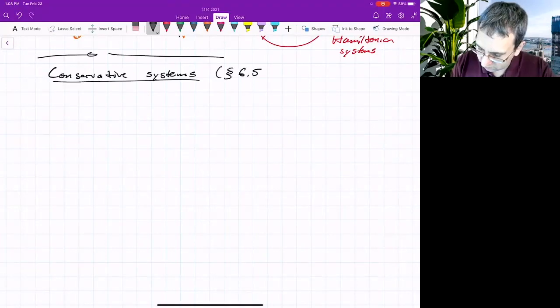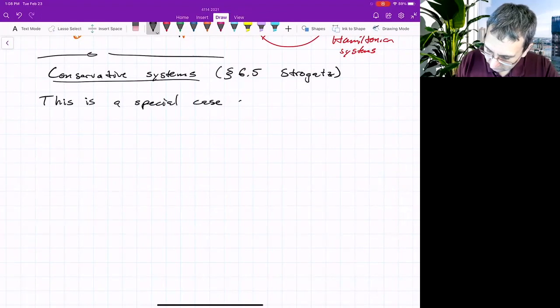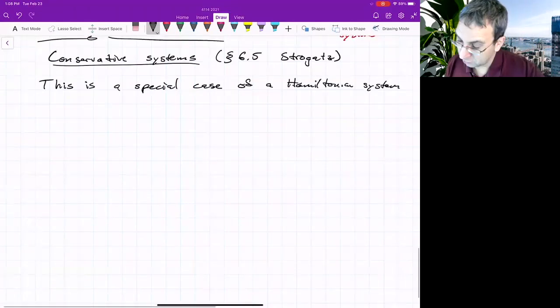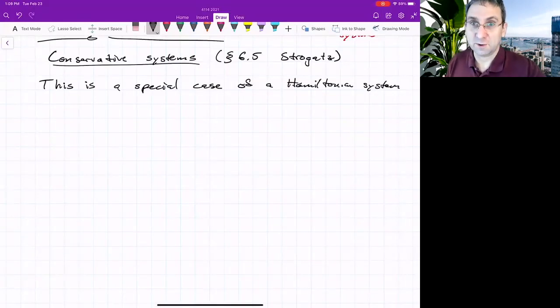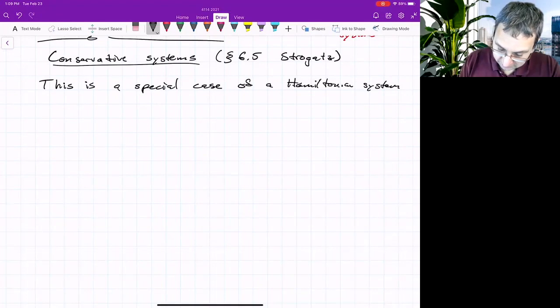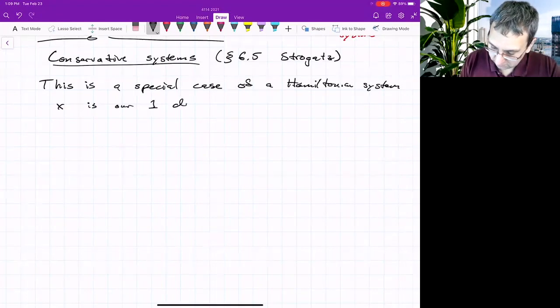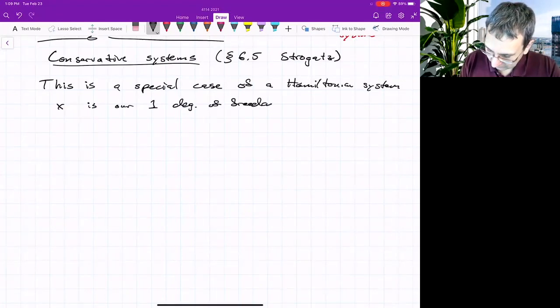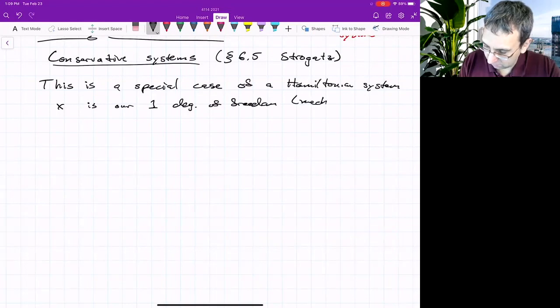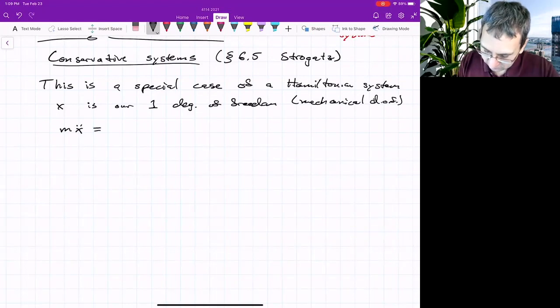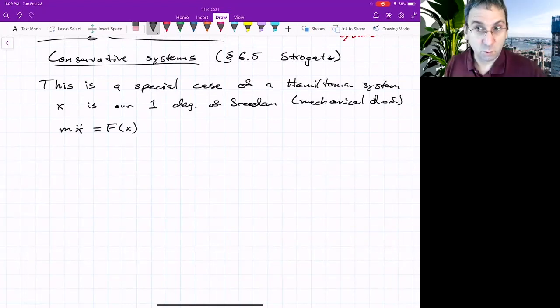A conservative system, section 6.5 of Strogatz. This is a special case of a Hamiltonian system. The inspiration comes from Newton's law for a one degree of freedom system. If you have motion in one dimension, let's call that dimension x. x is our one degree of freedom, a mechanical degree of freedom, then mx double dot equals f. That's mass times acceleration equals some function, the force.